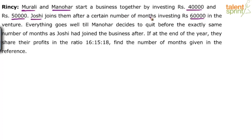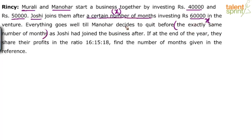Joshi joins after a certain number of months — let's assume that number is X. So Joshi joined after X months. Everything goes well till Manohar decides to quit before exactly the same number of months as Joshi had joined after. So Joshi joined in the middle and Manohar left in the middle. If Joshi joined after X months, Manohar leaves before X months from the end. Since it's end of the year, we're referring to 12 months. Find the number of months X.